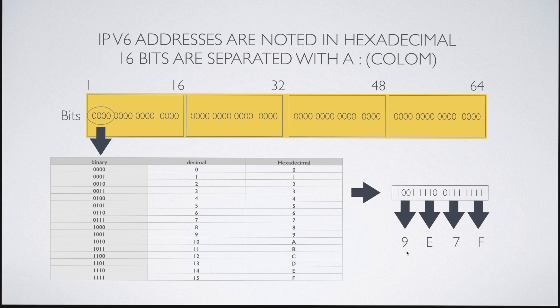IPv6 addresses are noted in hexadecimal. Groups of 16 bits are separated with a colon, as we've seen before. So here is our first chunk of 16 bits. And the first four bits can have any value between 0000 and 1111 in binary form. This can be translated into a decimal value between 0 and 15, or a hexadecimal value between 0 and f.